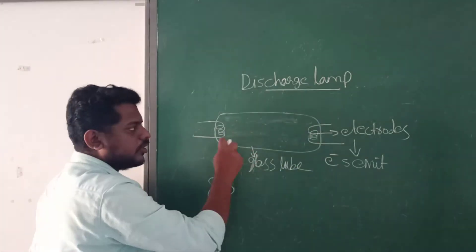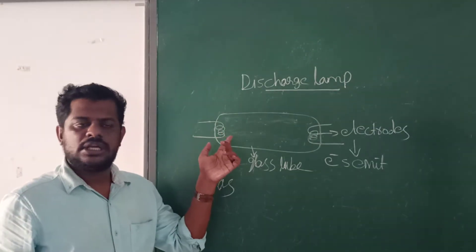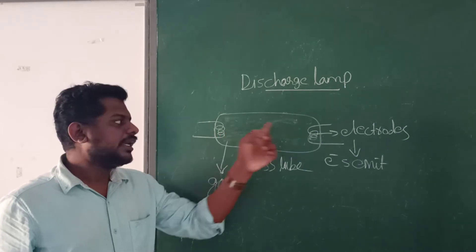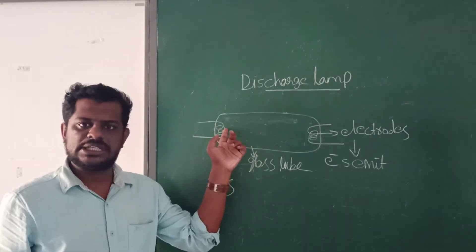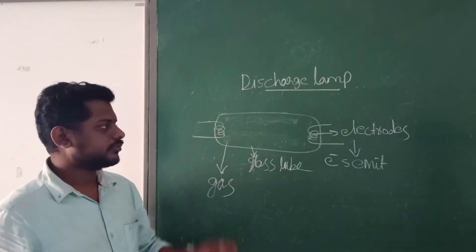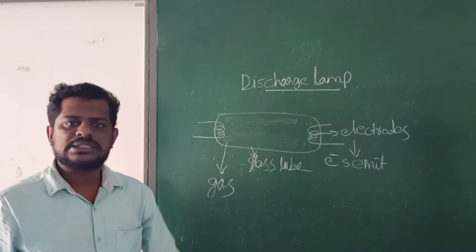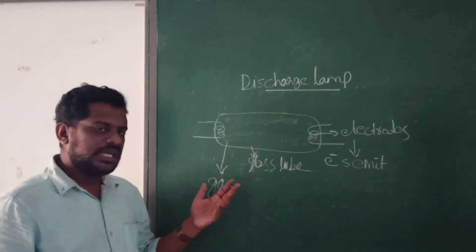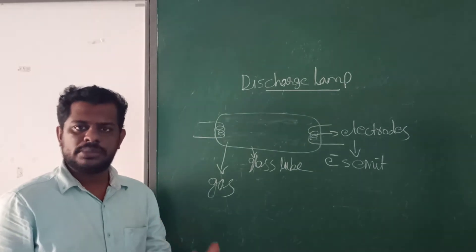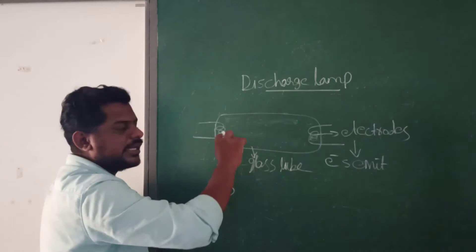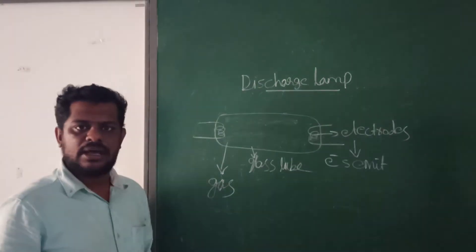So to recap the structure: this is a glass tube, both sides have electrodes. When current passes through these electrodes, electrons will emit. A suitable gas is filled inside this glass tube — such as hydrogen, nitrogen, sodium, or mercury. This is the structure of the discharge lamp.